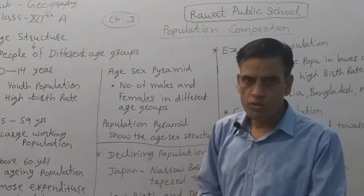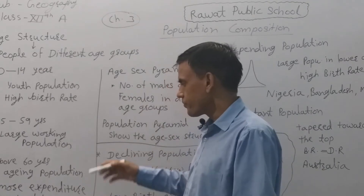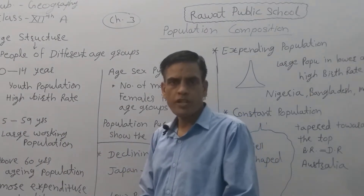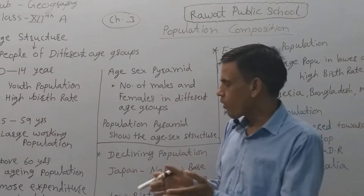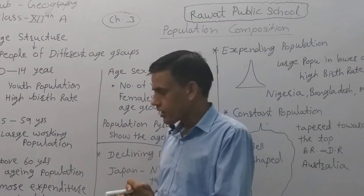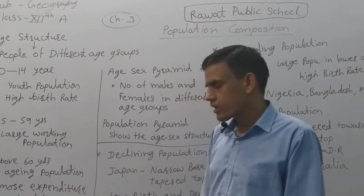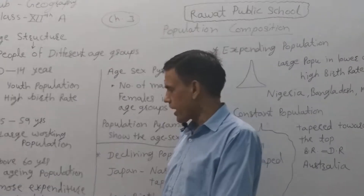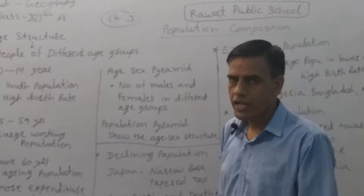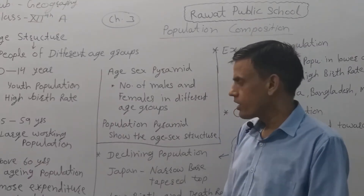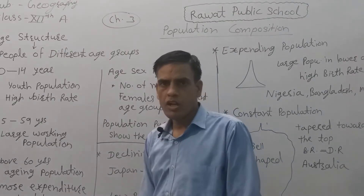The third group is above 60 years — the aging population. Where the number of people above 60 years is large, it means there is more expenditure on health care facilities. If elder or older-age persons are more in number, the health facilities requirement is very high and there is more expenditure in that country.